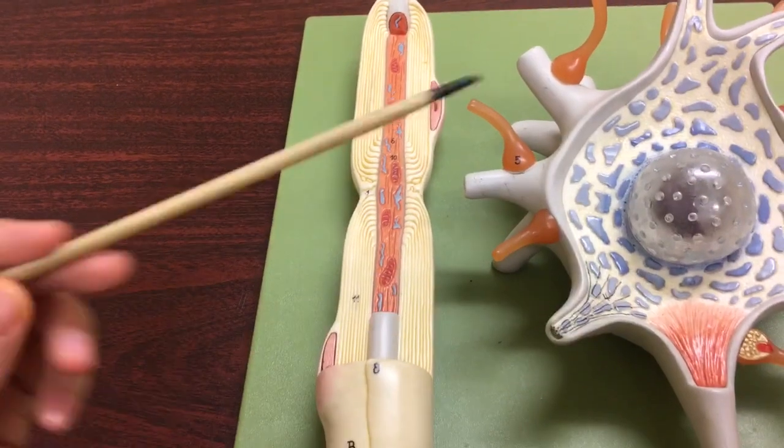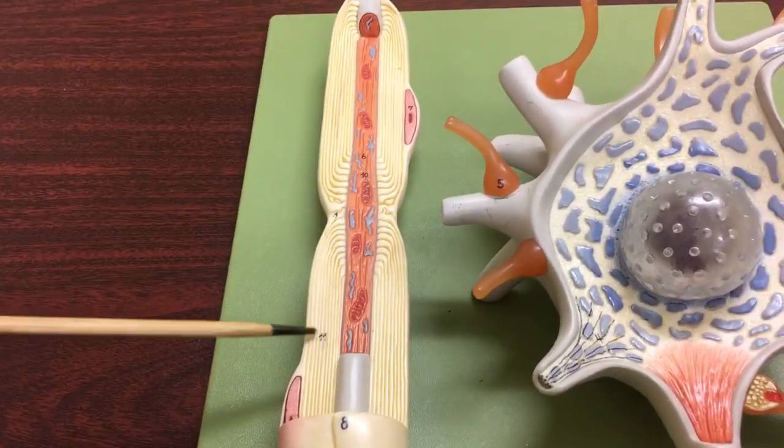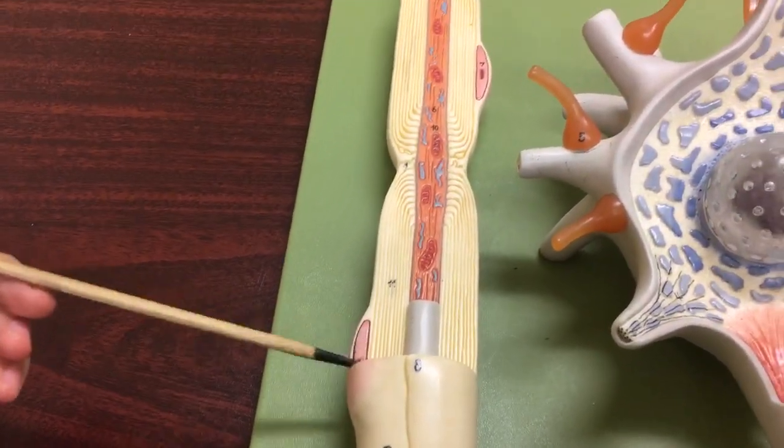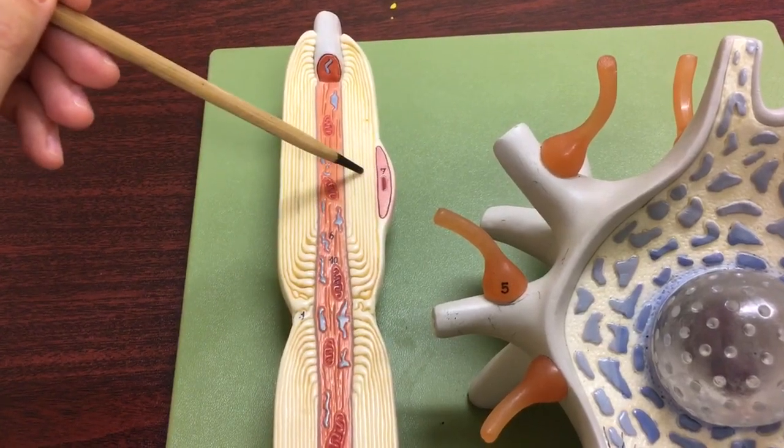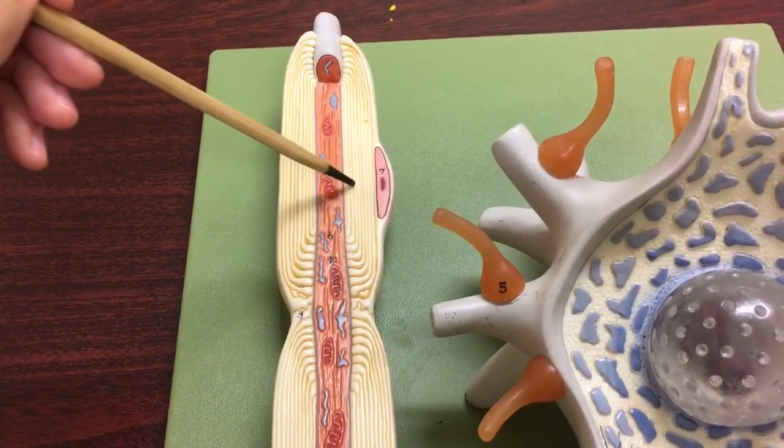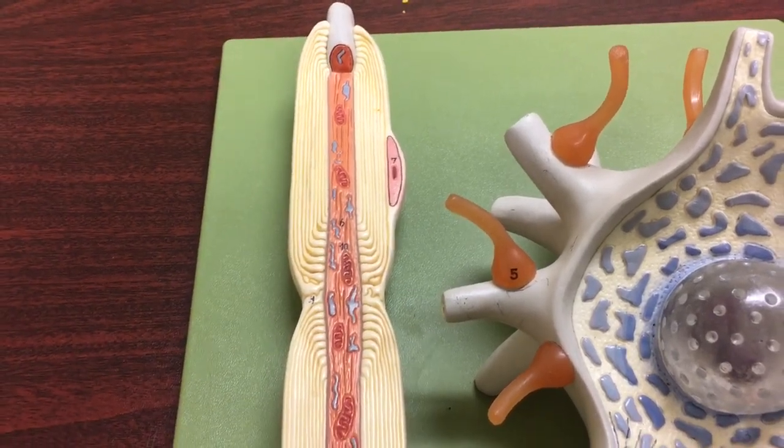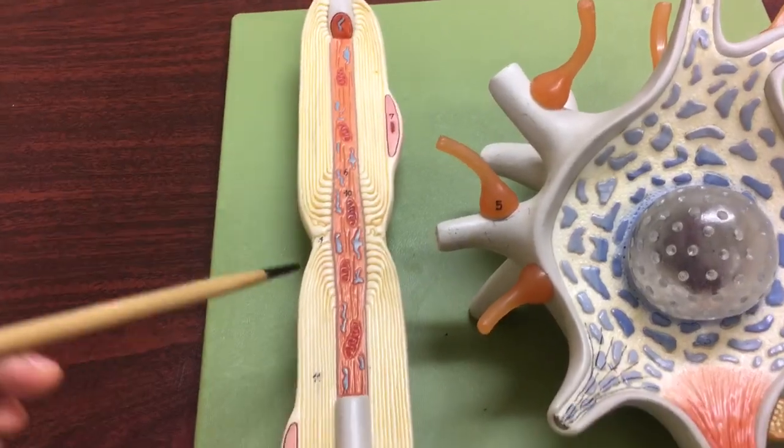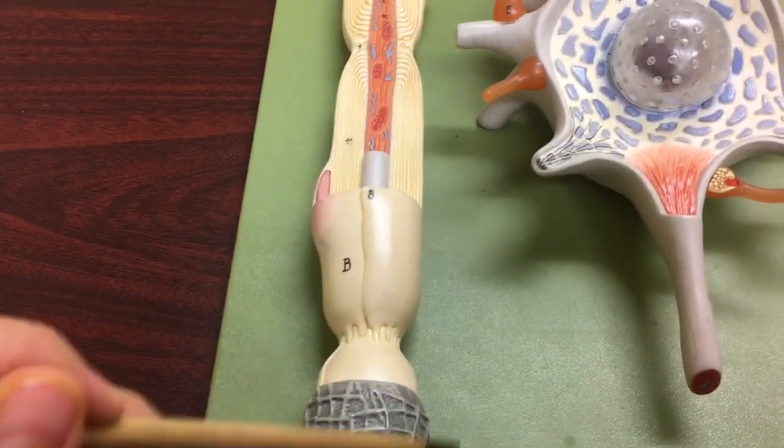This is a motor neuron, so these myelin sheaths are produced by these Schwann cells. You can see the nucleus of the cell. Each of these is actually a Schwann cell that forms a blanket and wraps around the axon of the neuron. Here we can see one Schwann cell wrapped around the axon, another Schwann cell, and another one over here.